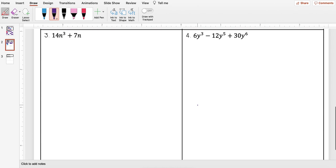Okay go ahead and pause the video. I want you to try and do number 3. So the answer you should have gotten for number 3 was 7n times 2n squared plus 1.